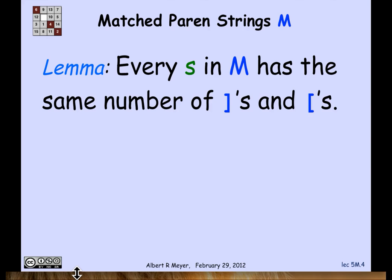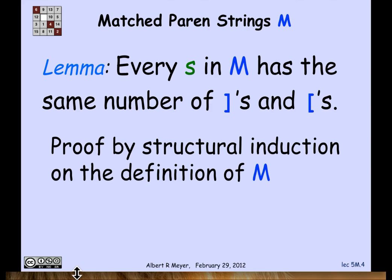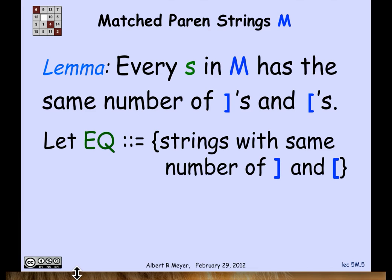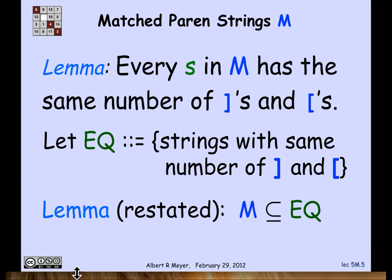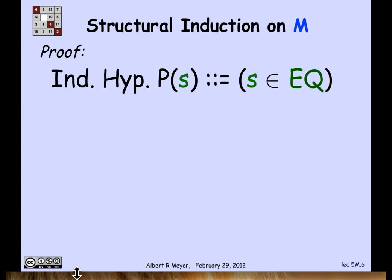Now let's look at a more interesting example: the set M of matching left and right brackets. I want to prove by structural induction that every string in M has the same number of left and right brackets. I can restate this by defining EQ to be the set of strings with the same number of right and left brackets. What I'm really saying is that M is a subset of EQ. I'll prove this by defining my induction hypothesis P(s) to be that s is in EQ—that is, s has an equal number of left and right brackets.